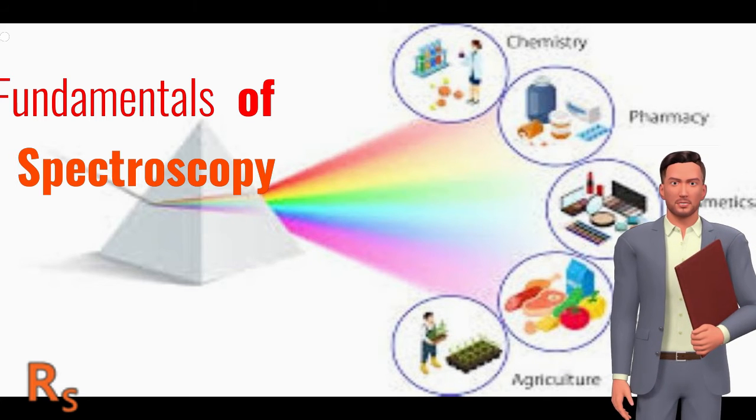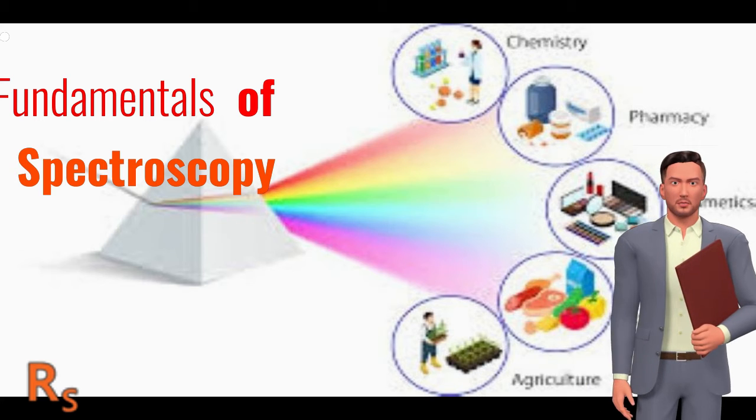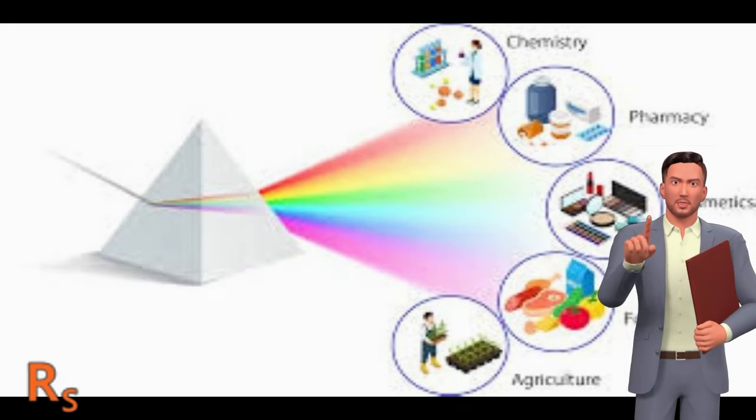Depending on the frequency of radiation interacting with the matter, one can have different forms of spectroscopy. These spectroscopic techniques allow us to monitor the structural properties of matter.